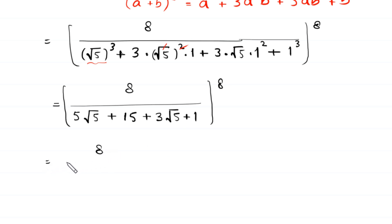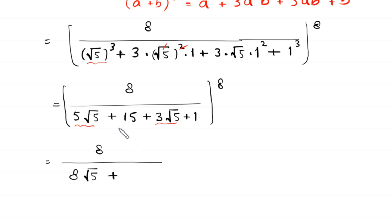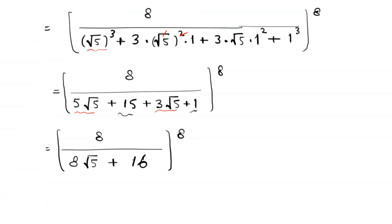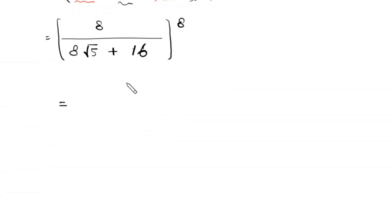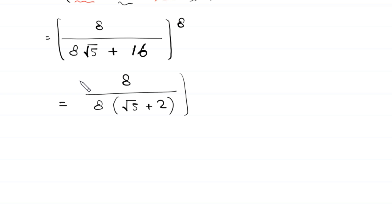Next, combining like terms: 5 root 5 plus 3 root 5 gives 8 root 5, and 15 plus 1 gives 16. So we have 8 divided by 8 root 5 plus 16, whole to the power 8. From the denominator we factor out 8, leaving root 5 plus 2. This 8 cancels with the numerator 8, leaving 1.